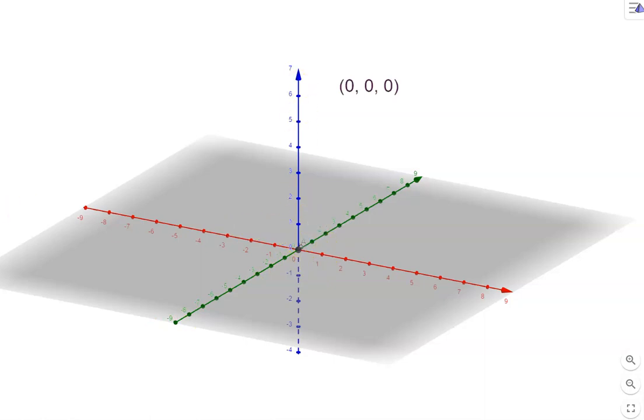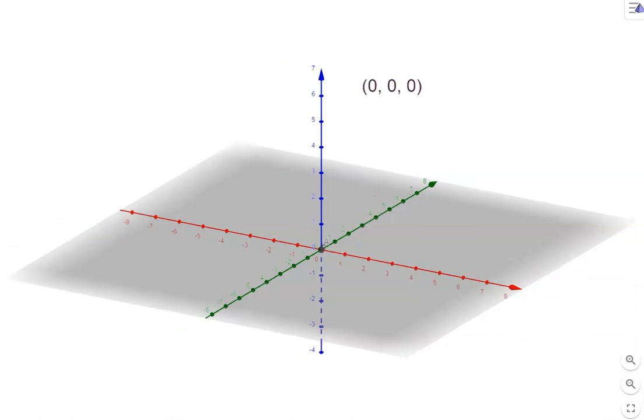Now I'm going to change the x value. Similarly, I can take it to the negative side as well. Now I'm going to change the y value. Now I'm going to change the z value, negative and positive.